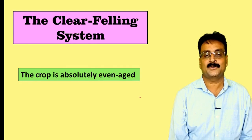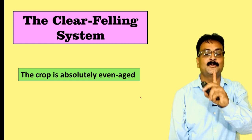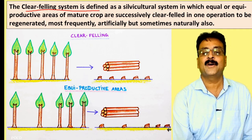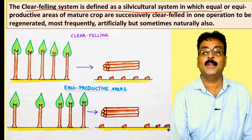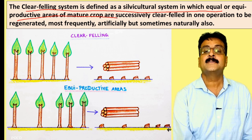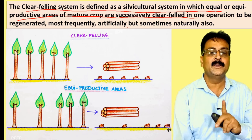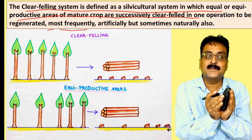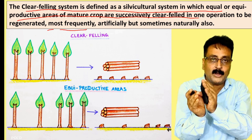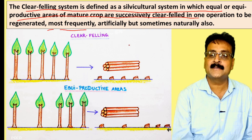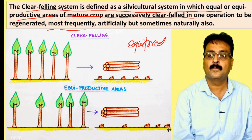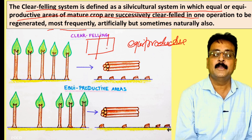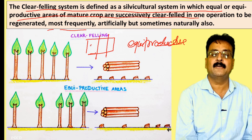The clear felling system produces an absolutely even-aged crop. It is defined as a silviculture system in which equal or equi-productive areas of mature crop are successively clear-felled in one operation, to be regenerated most frequently artificially, and sometimes naturally. Equi-productive means that the annual felling area, or coupe, should yield an equal harvest — each coupe should be equi-productive.